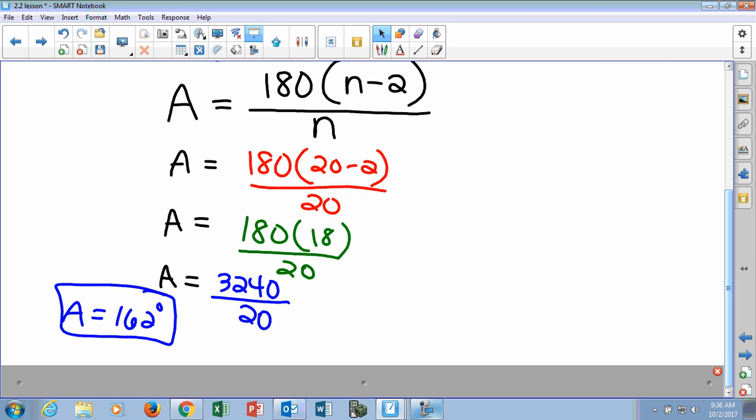So again, remember, the n here in the equation gets replaced with the side of figure you're looking for. And now it's just order of operations to figure out what the one angle is. If we were only looking at the angle sum, you would only need this part. But because they want to find one specific angle, now we've got to divide it by the sides of the figure because we're going to find one angle instead of the sum of all 20. So understand the difference.